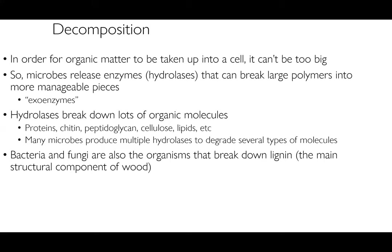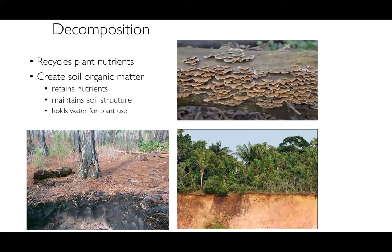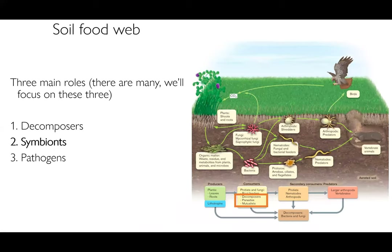Bacteria and fungi are the organisms that break down lignin and cellulose, the two main structural components of wood. In terms of decomposition, this recycles plant nutrients and creates soil organic matter. There are two broad classes of soils: mineral soils, which have very low carbon content, and organic soils, which have very high organic content where lots of microbial activity is occurring.